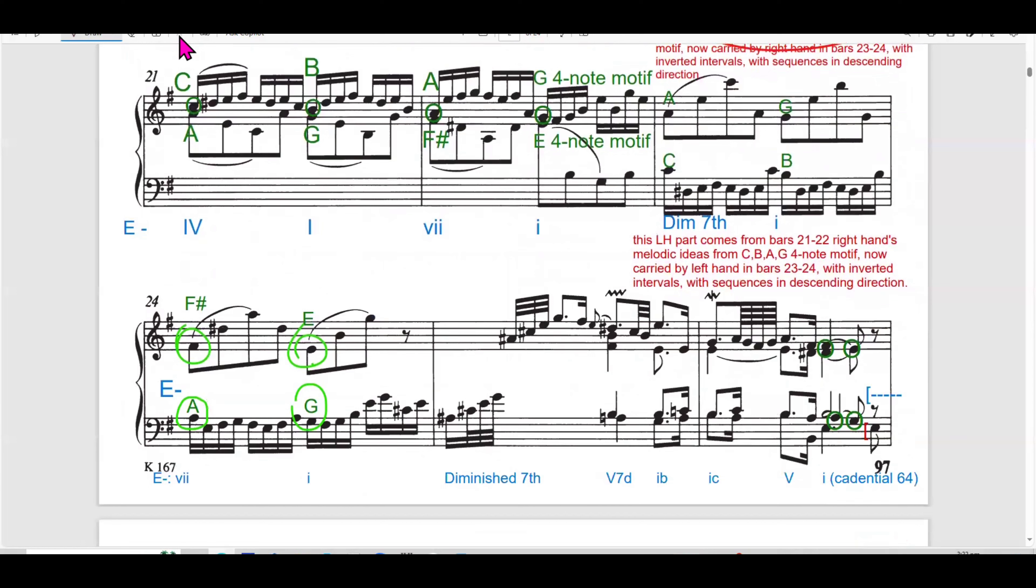In bar 19, Bach introduces descending sequence in both hands, with the right hand moving through the hidden melodic line C, B, A, F-sharp. Four note motif in contrast with the ascending line in bar 15 to 16, contrast with 15 to 16, which is an ascending sequence. Here, the sequences are going up.